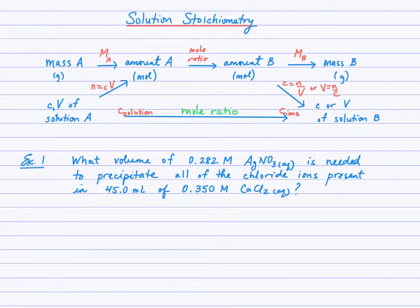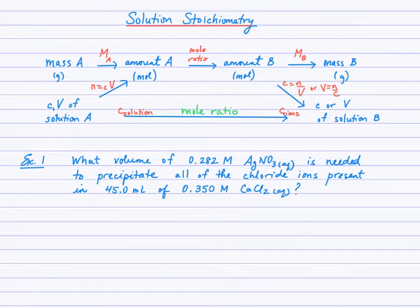Let's look at the first example. We're being asked what volume of a 0.282 mol/L solution of silver nitrate is needed to precipitate all of the chloride ions present in 45 mL of 0.350 mol/L calcium chloride solution. As usual, when we read the question, start with a balanced chemical equation, list the variables of each substance given, and indicate what's required.